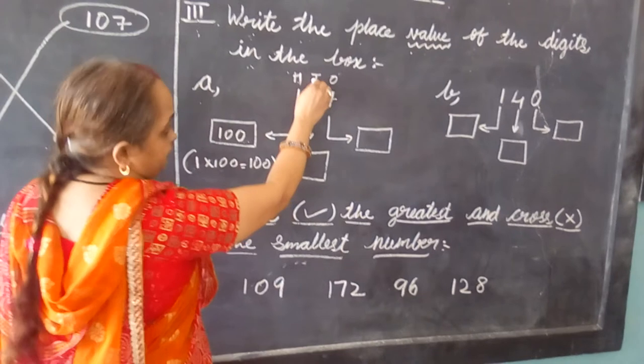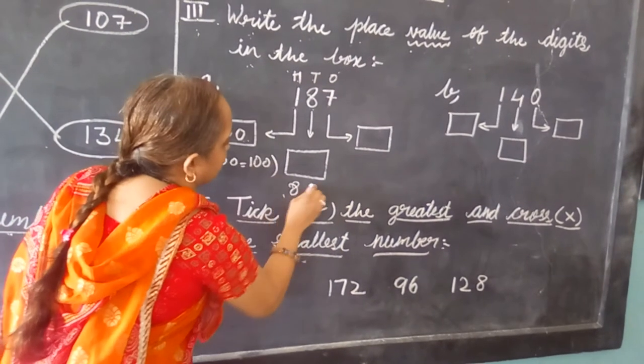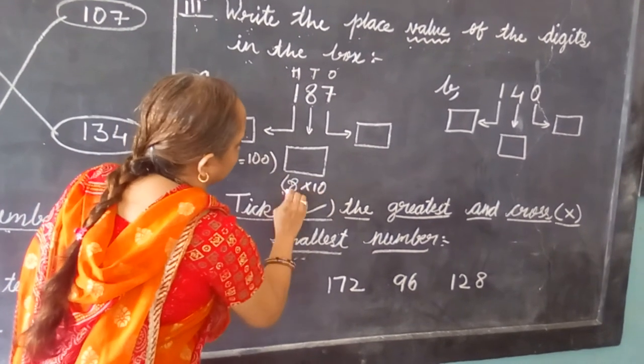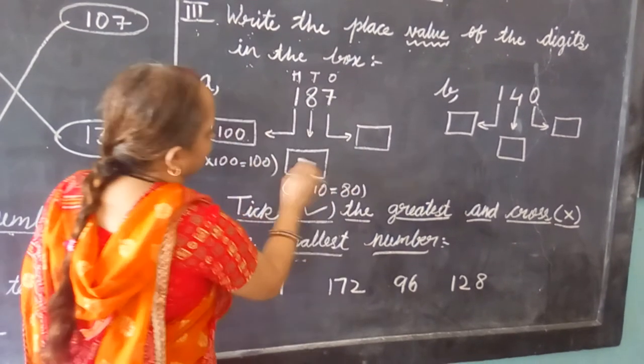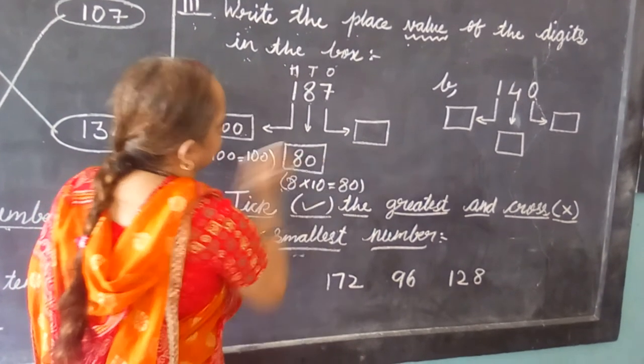Now we have 8 multiplied by 10. 8 multiplied by 10, so 8 tens is 80. So we are going to write here 80 in the box.